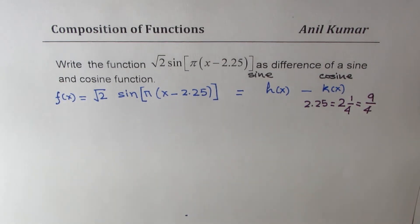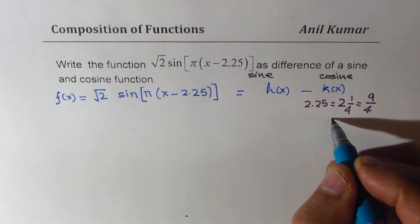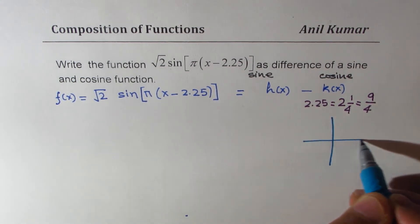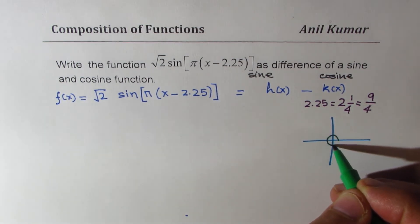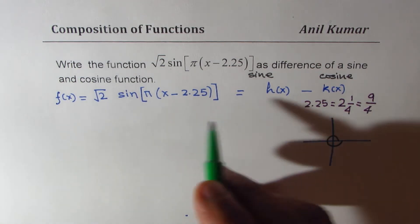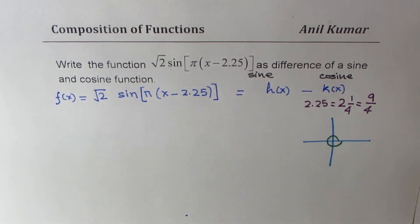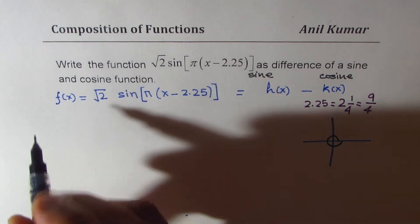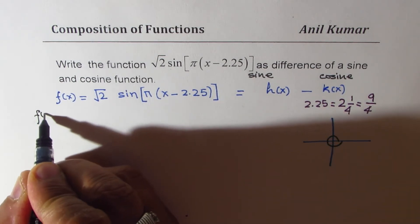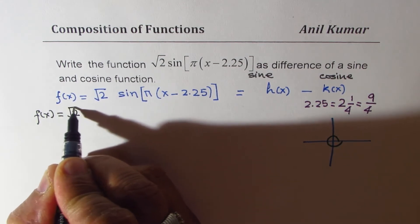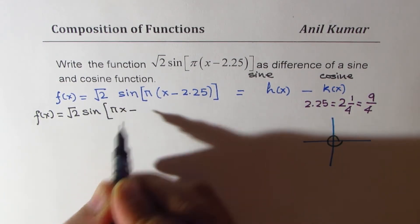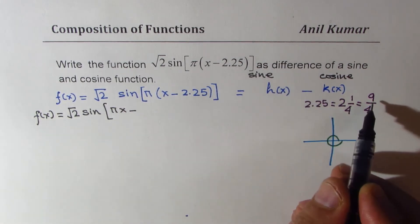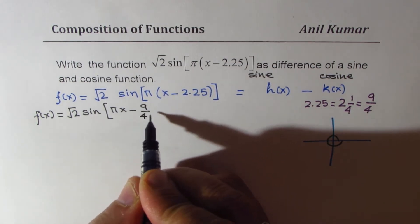Now, when we write here, we mean there is a phase shift for the sine function, right? It has moved right by 9 by 4. 9 by 4 means one full circle is 8. Okay, when we open it, let me just first open this bracket. So what we have here is our function f of x equals square root of 2 sine of pi x minus 9 over 4 pi.